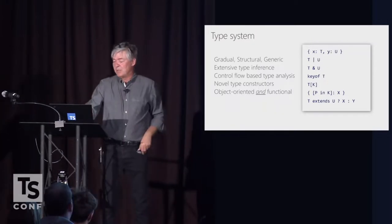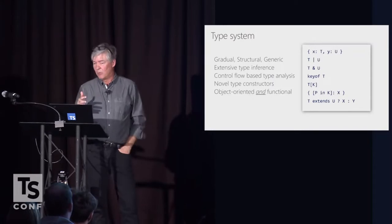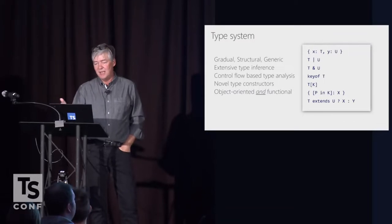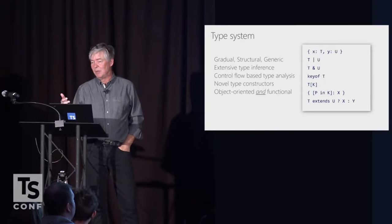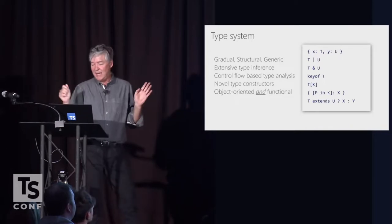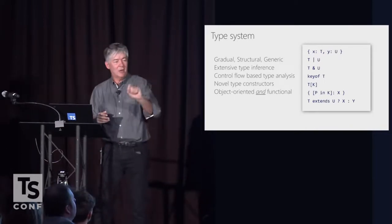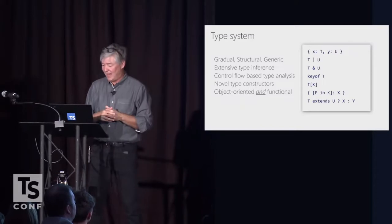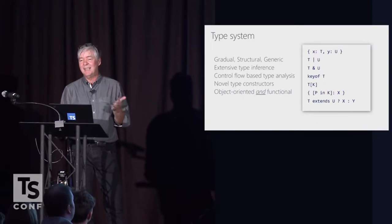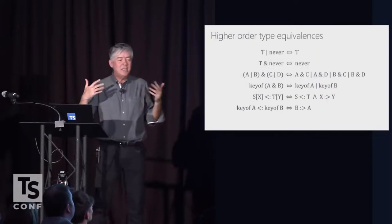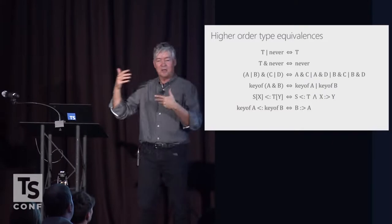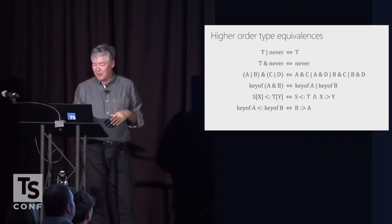Key of and index access types, map types, and now the last one on the bottom is our new baby called conditional types. And these types are, these are in particular interesting, because they only exist in higher order form, these types. So they are only ever there if one of the constituents is a type parameter. Like key of T, for example, the minute we know what T is, it evaporates and it just becomes a union of string literals, right?